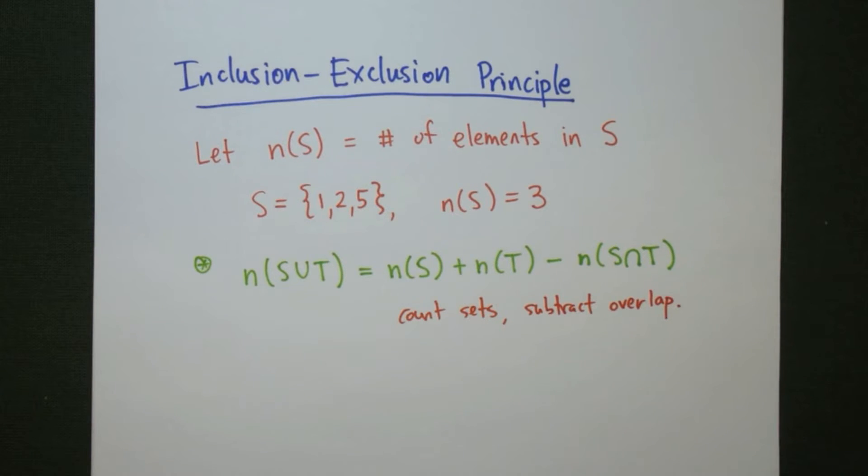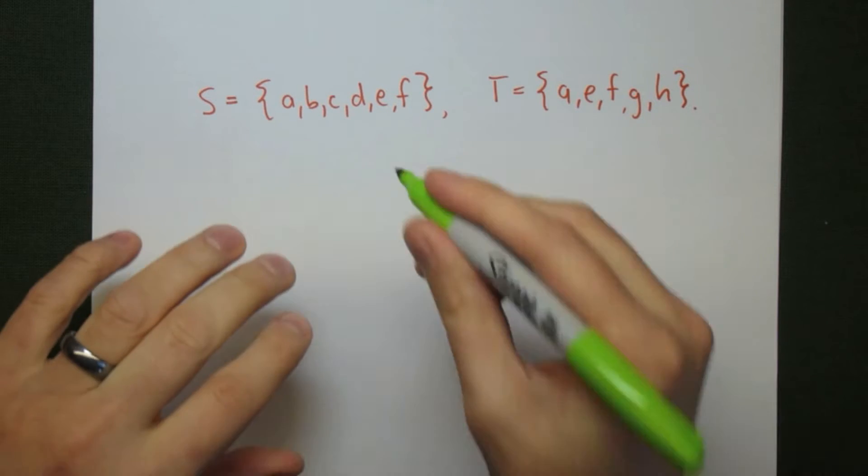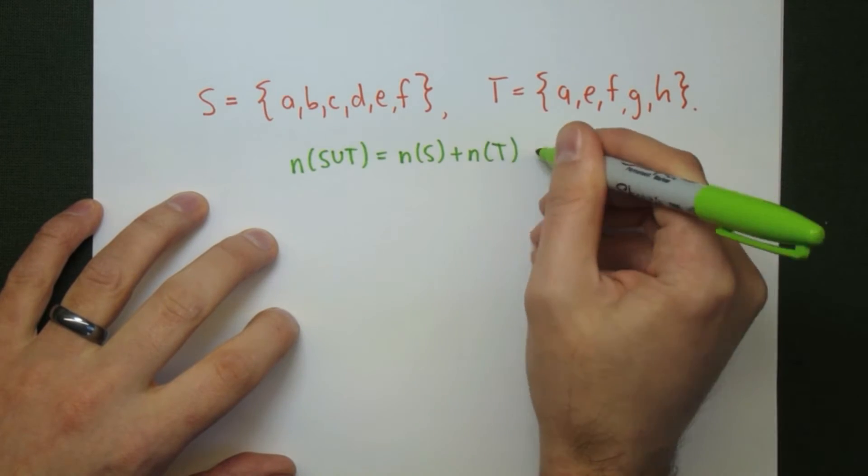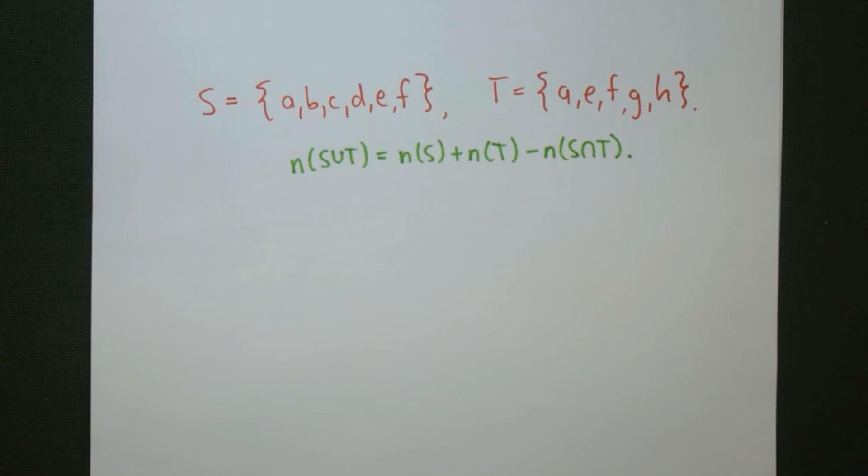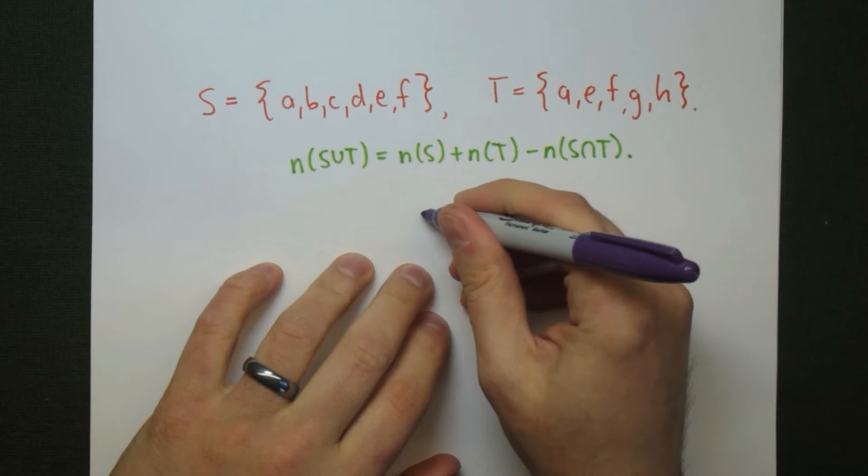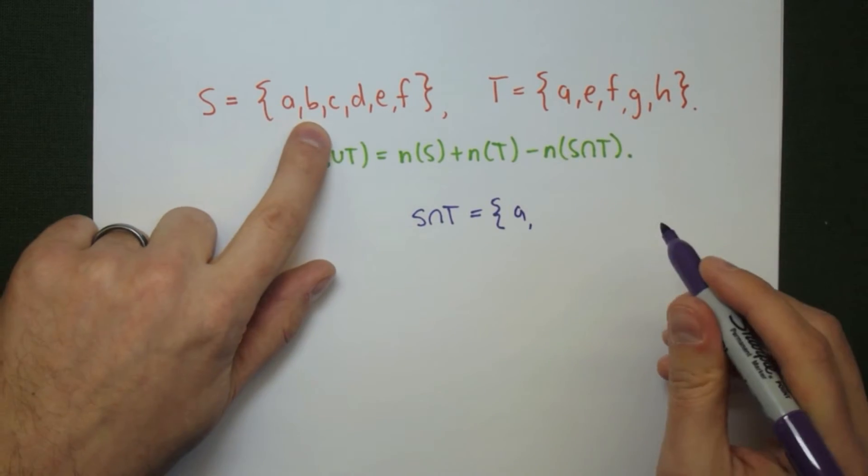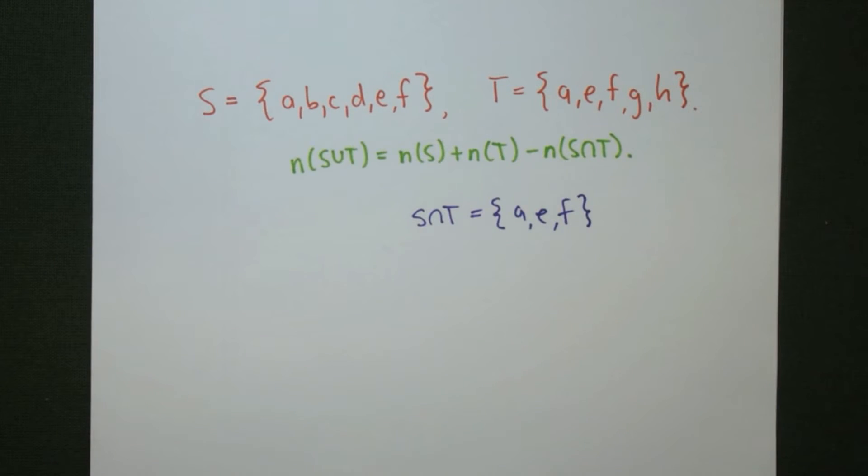We'll look at two examples. The first example are these two sets here. So if S is the set of letters A, B, C, D, E, F, and T is the set of letters A, E, F, G, H, then we'll use the law of inclusion-exclusion to see how these numbers all relate together. S intersect T in this case is going to be A, E, and F, the only things that occur in both sets.